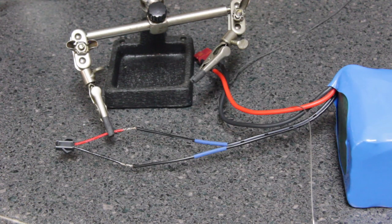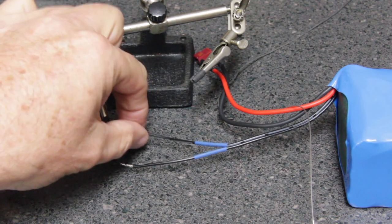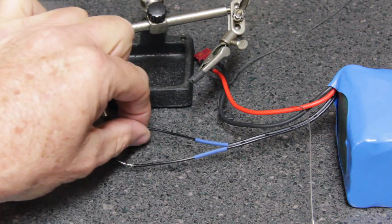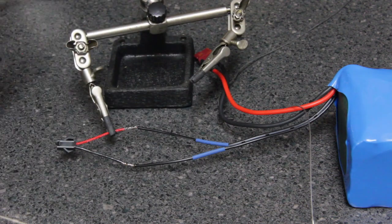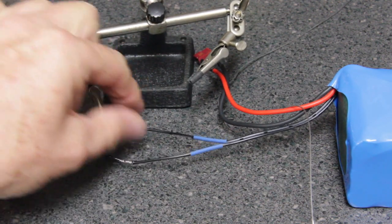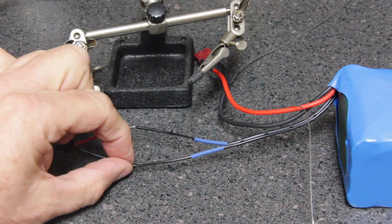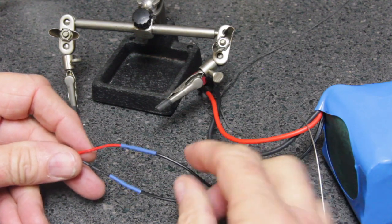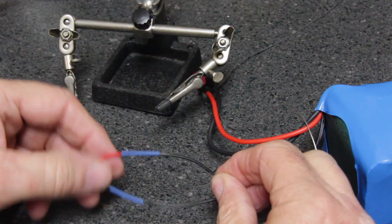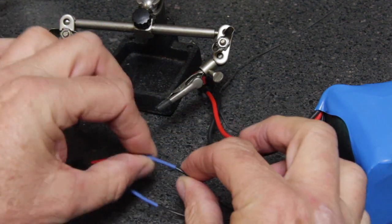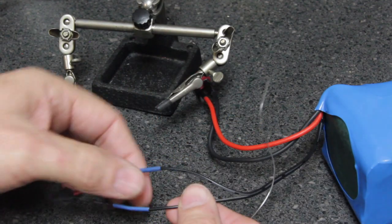We don't want to slide the heat shrink tubing over until the wires have cooled down, otherwise it will start shrinking before we're ready for it to shrink. So just touch it lightly with your fingers, make sure that the wires are cool. Then we'll slide the heat shrink over the splice of the wire. After the wire is cool, we just simply take the heat shrink tubing and slide it down over the wire. You may have to jiggle it, you may have to bend it a little bit, but if you've done it right, you'll be able to slide the heat shrink tubing over.